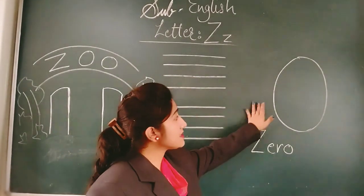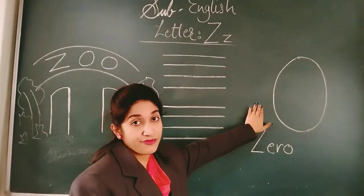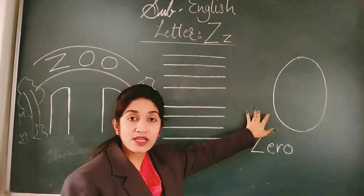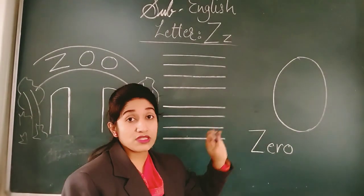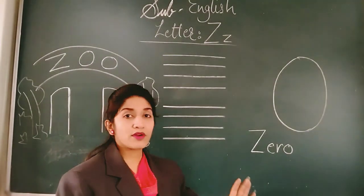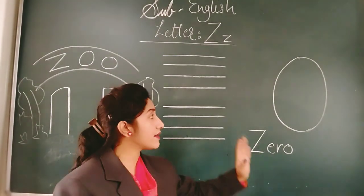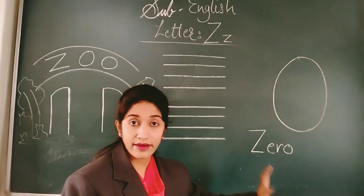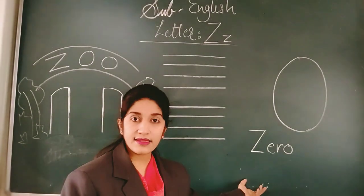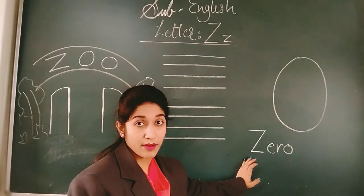And what is this? This is Z for Zero. Hum numbers joh start karte hain, woh zero se start karte hain. Aur koi bhi number ko jaysay 10, 20, 100, 200 — unko end karna hai toh zero se end karte hain. So zero is also a very important number.